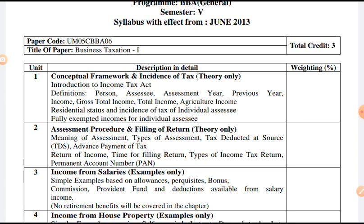Now let's see the difference between Association of Persons (AOP) and Body of Individuals (BOI). An Association of Persons is one that is formed voluntarily, and any person can be a member — that is, individuals as well as entities like companies and firms. Two or more persons join together for a common purpose to earn income — they are called an Association of Persons. Co-heirs, co-legatees, co-donees, etc. joining together would be chargeable as an Association of Persons.